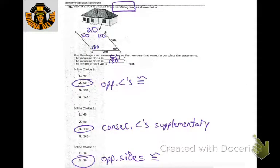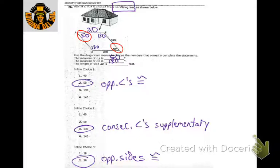This is a parallelogram. We know angle A and angle C are congruent — so they're both 50. Consecutive angles are supplementary, so angle B has to be 130, because it's right next to it. And if this side is 20, so is the side across from it — also 20.